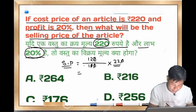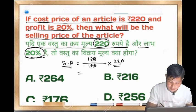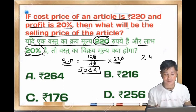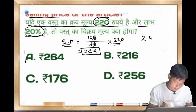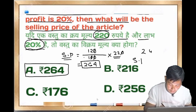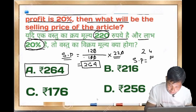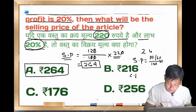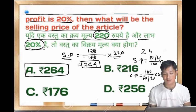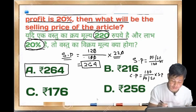Cost price is 200. Selling price formula: SP equals CP multiplied by (100 plus profit percentage) divided by 100. For profit or loss, SP equals CP into (100 plus or minus profit/loss percentage) divided by 100. So selling price is calculated from cost price and profit percentage.